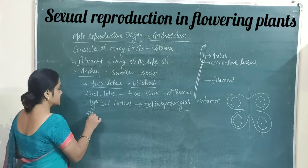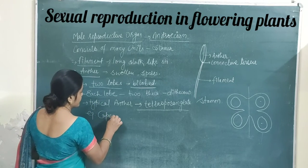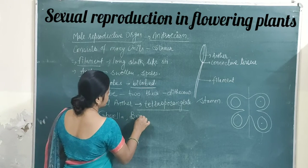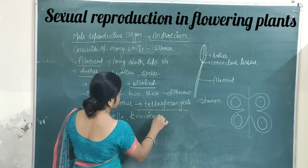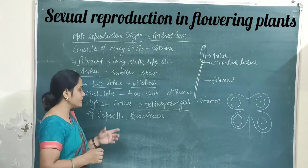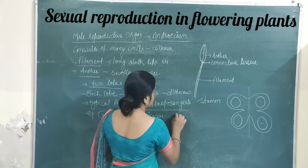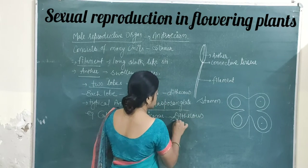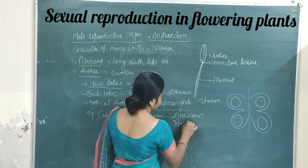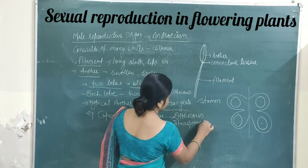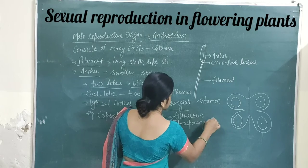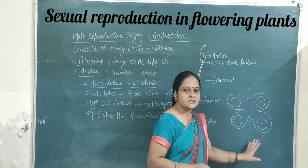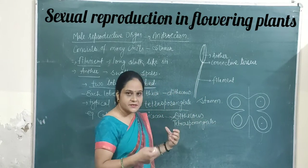There are different examples. For example, Capsella and the Brassica family — the mustard family. In both of these, the anther has the dithecous and tetrasporangiate condition. This exact type of structure is present in Capsella and all members of the Brassica family.